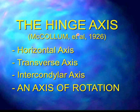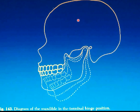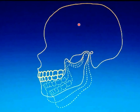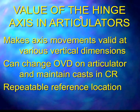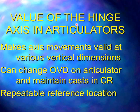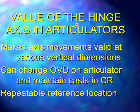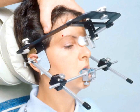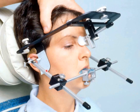We can use our axiopath recorder to locate the hinge axis, where we have a head frame and a graph support over the temporomandibular joint. We have a clutch over the teeth with a bar and recording arms that we can move around in different positions, have the patient open and close, and see the stylus arching — moving it until it just pivots in one position, a hinge axis location.